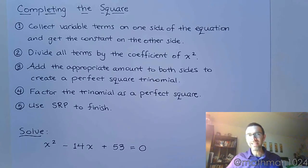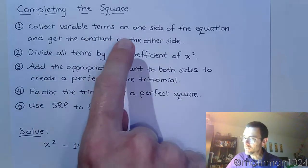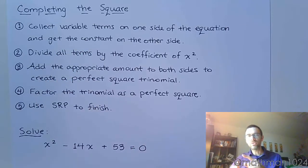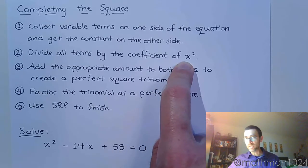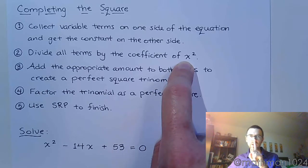Here are the steps for completing the square to solve a quadratic equation. The first step is to get your variable terms on one side of the equation and then move the constant to the other side. Simple enough, it's just a simple manipulation of the equation. Step 2 says to divide all terms by the coefficient of x squared. Now the reason we want to do this is so that we have a lead coefficient of 1.